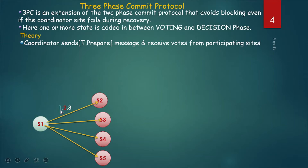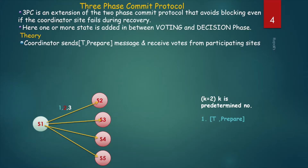Message number 1 is the T-prepare message. I am taking one pre-determined number K, and the value of K is 2. How many participating sites are there? There are 4. At least half or greater than half the number of participating sites should respond. So because there are 4 participating sites, I am taking the value of K as 2.